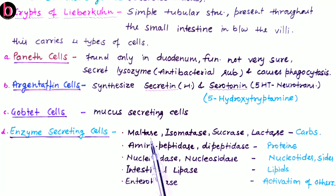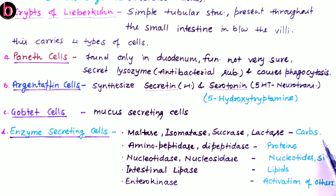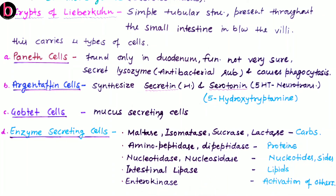The last cell type is enzyme-secreting cells, which secrete a number of enzymes: maltase, isomaltase, sucrase, and lactase for carbohydrate digestion; aminopeptidase and dipeptidase for protein digestion; nucleotidase and nucleosidase for digestion of nucleotides and nucleosides respectively; and intestinal lipase for digestion of lipids or fat.